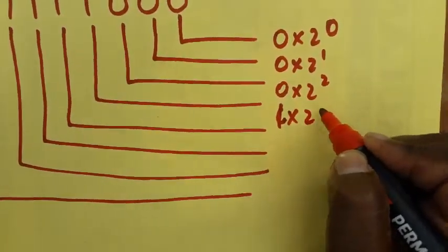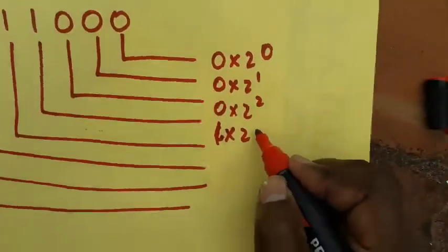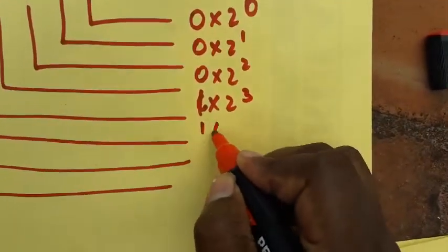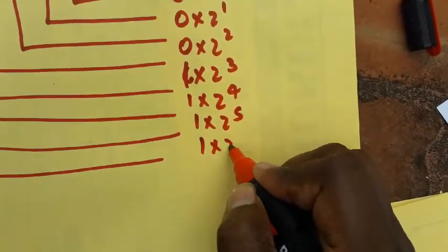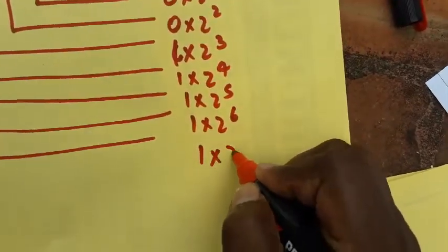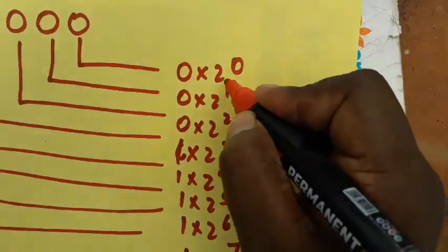In the fourth place, we can write it as three: one into two power four, one into two power five, one into two power six, one into two power seven. So the two power, we have to increase.